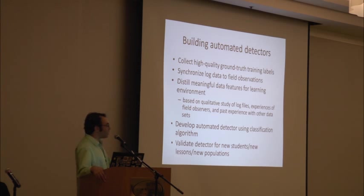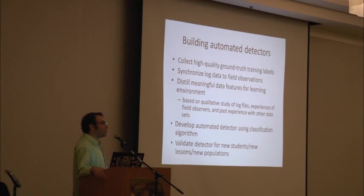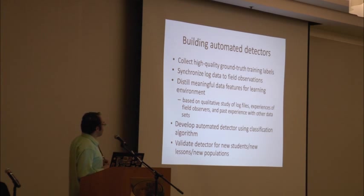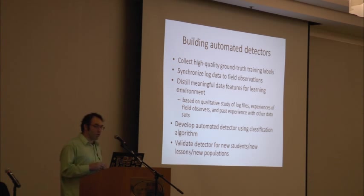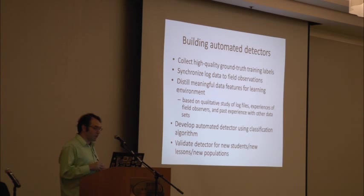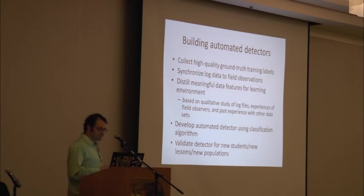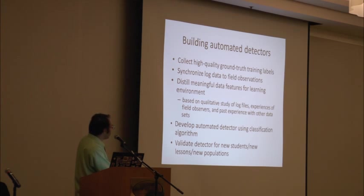We collect high-quality human data — called training labels — on when students have a certain engagement state. We synchronize the log data to the field observations, and distill meaningful data features for the learning environment. We base this on qualitative study of the log files, the experience of our field observers in classrooms, and past experience from other data sets. We then develop automated detectors using data mining, machine learning, and classification algorithms, and validate the detectors for new data sets.